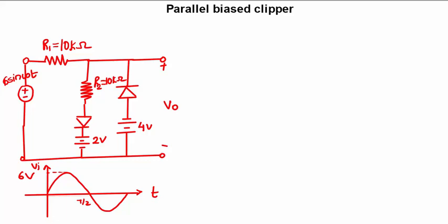Hello, welcome to In 5 Minutes. Next is the parallel biased clippers but with the resistance included in the circuit. What will be the change in the waveform if the resistances are connected in series with the diode?